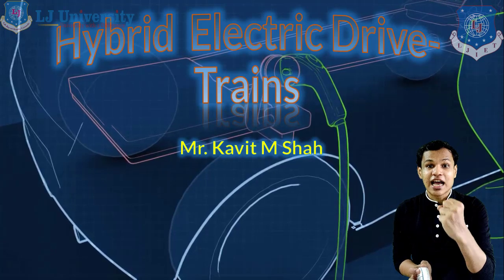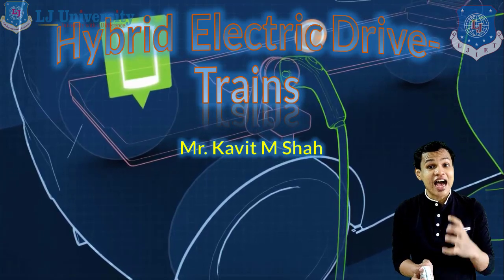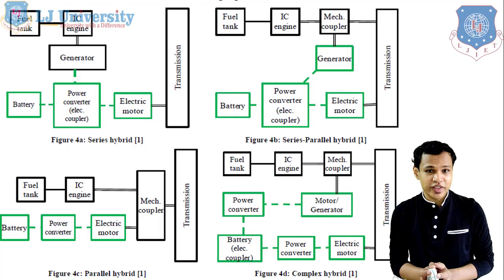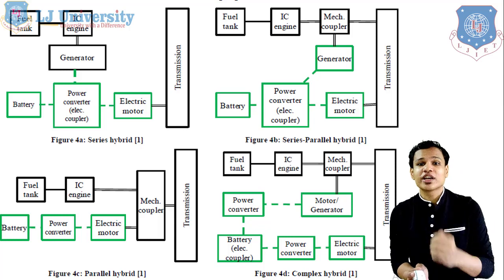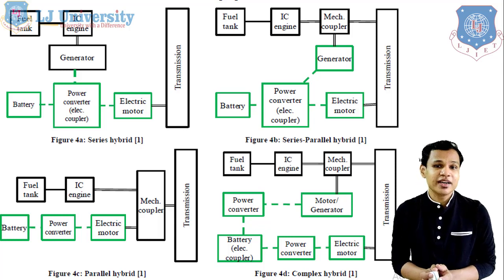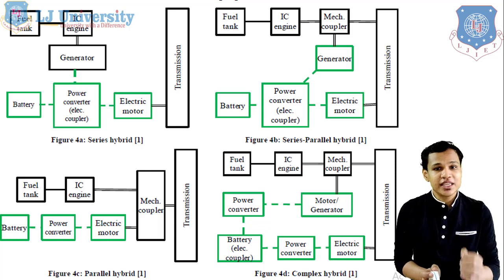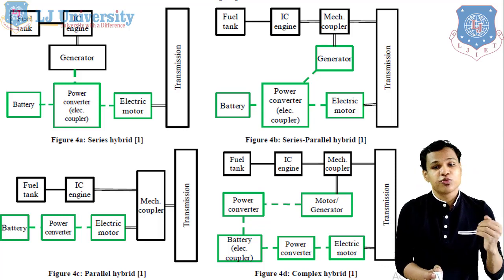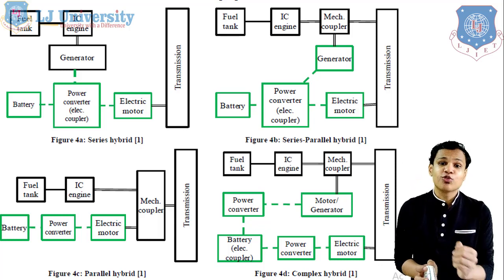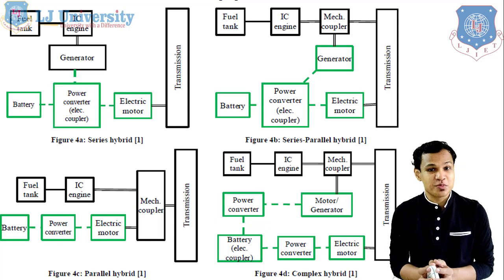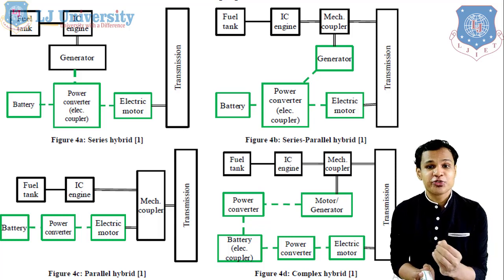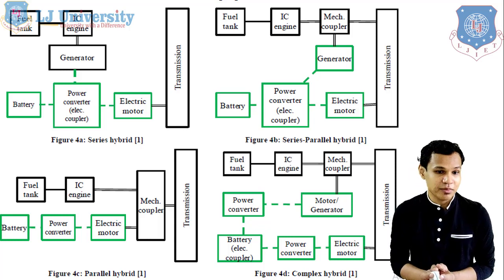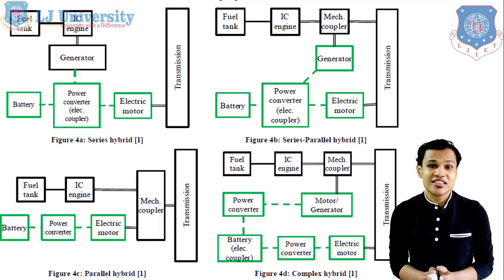Let's see the schematic diagram on which we will understand how these components are arranged. Here in this figure, you can see all four layouts. The first one is the series hybrid, that is figure 4A. Figure 4B is the series-parallel hybrid — the combination of series and parallel. The 4C is the parallel hybrid and 4D is the complex hybrid arrangement. These are the four different topologies for the HEV, that is hybrid electric vehicle system.